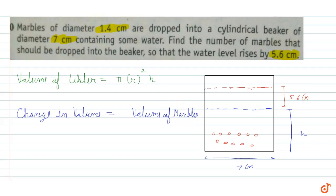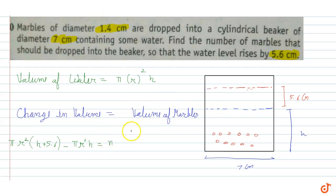The change in volume equals final volume π r² (h + 5.6) minus initial volume π r² h, and this equals the volume of marbles. Let's say we are putting n number of marbles, each with volume (4/3)πr³ since marbles are spherical. The diameter of a marble is 1.4 cm, so the radius is 0.7 cm.